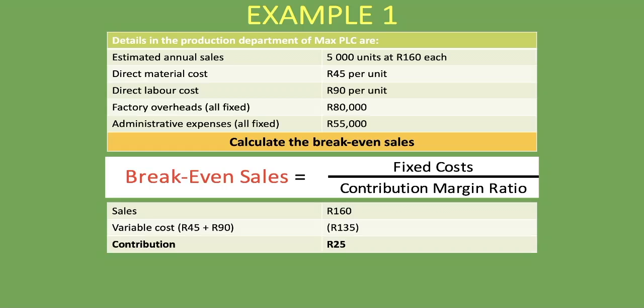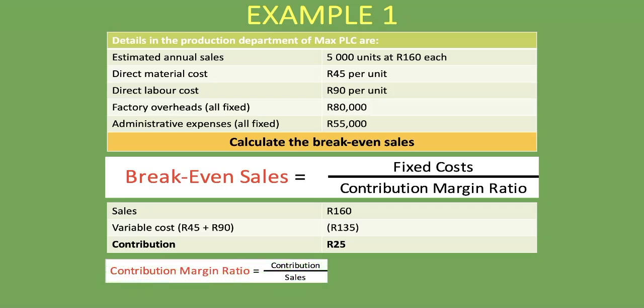Once you have your contribution, to get the contribution margin ratio you take the contribution of R25 and divide it by the sales of R160. So it's contribution divided by sales, which gives you the contribution margin ratio. In this case, R25 divided by R160 gives us a contribution margin ratio of 15.63%.